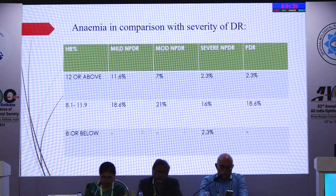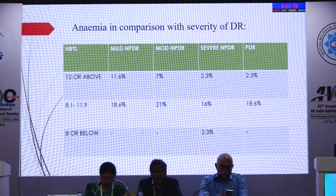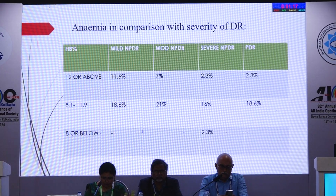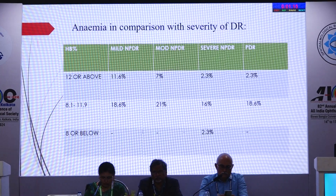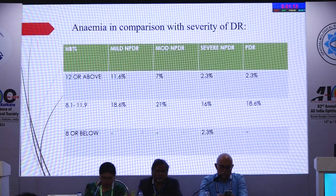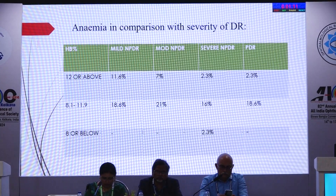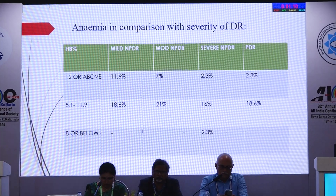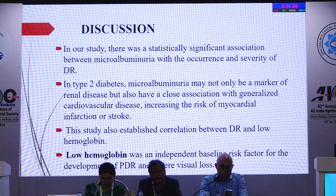This table shows anemia in comparison with severity of diabetic retinopathy. Hemoglobin of 12 or above was more common in mild NPDR, while hemoglobin of 8 or below was more common in severe NPDR.